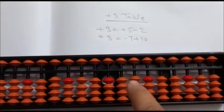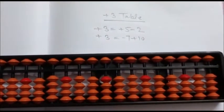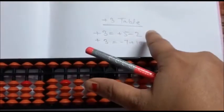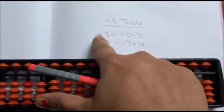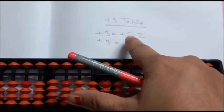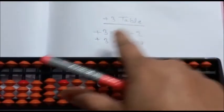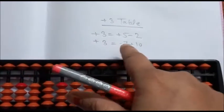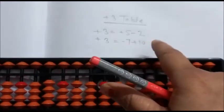Today we will do the plus 3 table on an abacus with the help of 2 formulas: plus 3 equals plus 5 minus 2, and the second is plus 3 equals minus 7 plus 10.